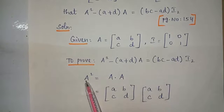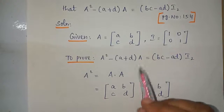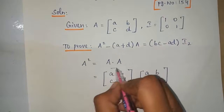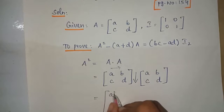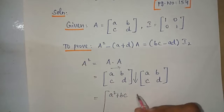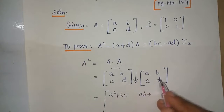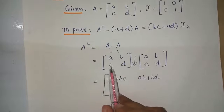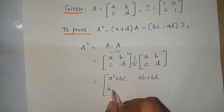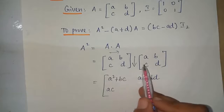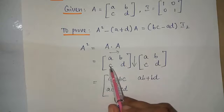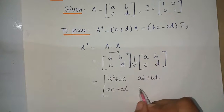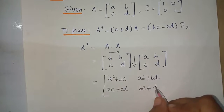First find A squared — that is A into A, matrix multiplication. First row first column: a into a is a squared plus b into c is bc. First row second column: a into b is ab plus b into d is bd. Second row second column: b into c is bc plus d into d is d squared. So A squared equals a² + bc, ab + bd, ac + cd, bc + d².